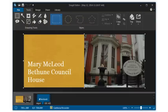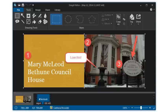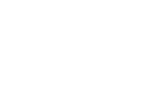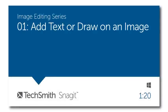For images, you can make some quick edits or add things like arrows, call-outs, or numbers. If you want to learn more about editing an image, check out the Image Editing series on the TechSmith website.